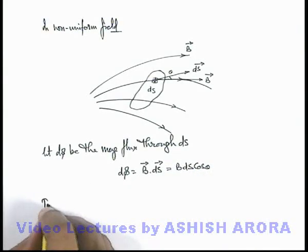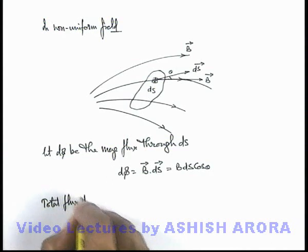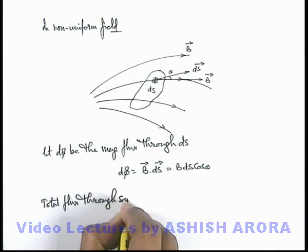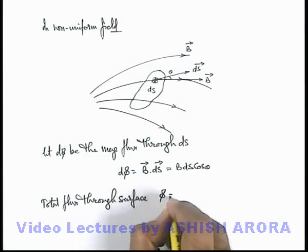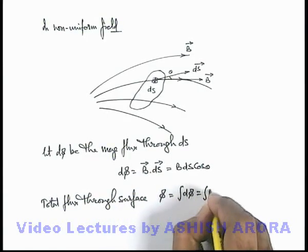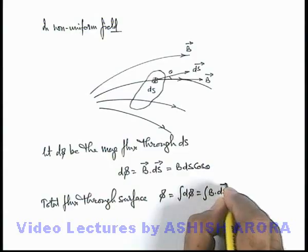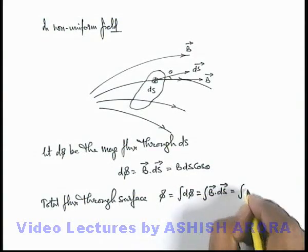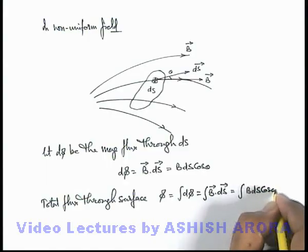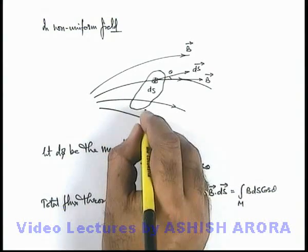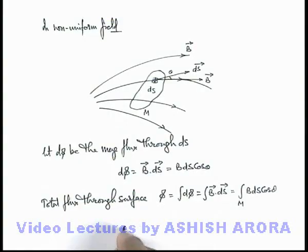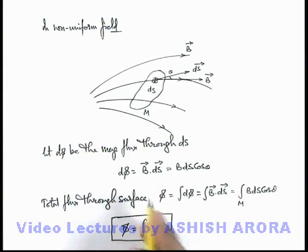We can calculate the total flux through a surface by integrating this value. So phi will be the integration of dφ, which equals the integration of B dot dS, or equivalently the integration of B dS cosine theta, with the limit over the surface M. You should always keep in mind that in a non-uniform field, flux can be calculated using the expression: integration of B dot dS. And if the field is uniform, that can be directly calculated as B dot S.